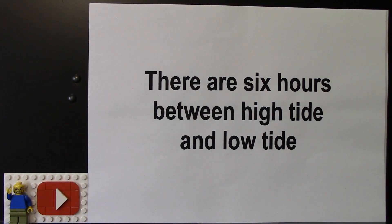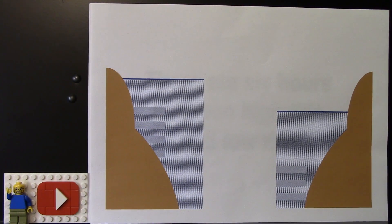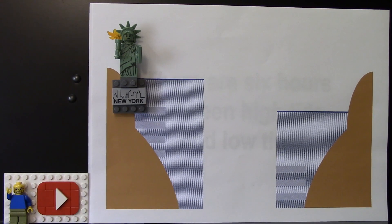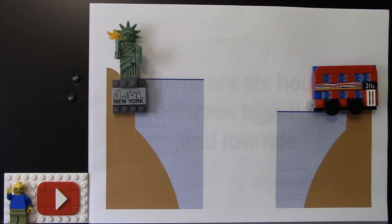We know that there are 6 hours between high tide and low tide. That implies that there is high tide in New York at exactly the same time, then there is low tide in London.